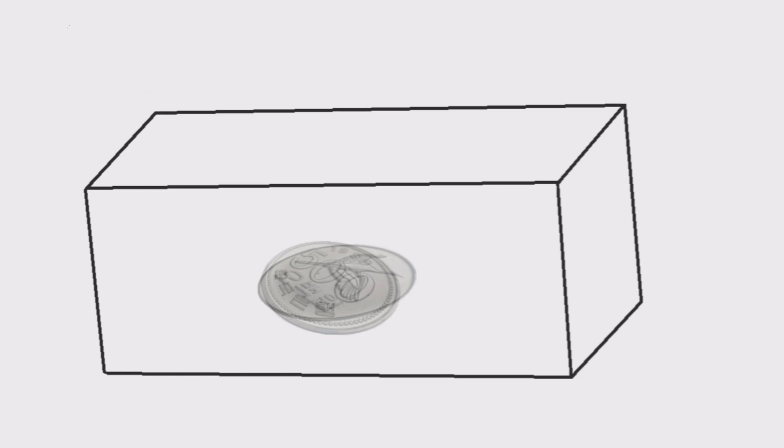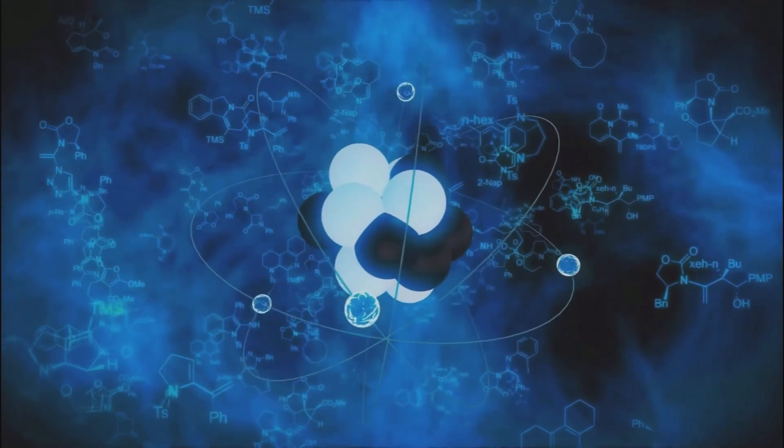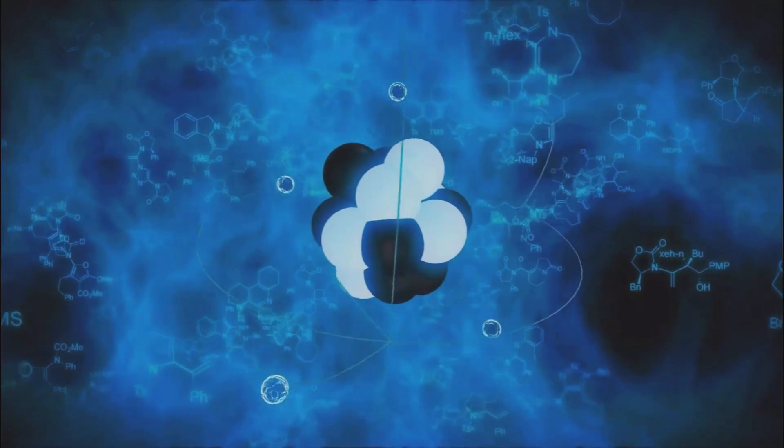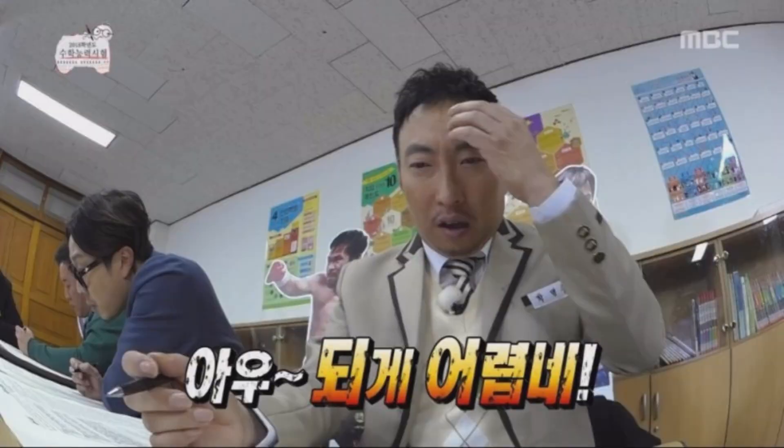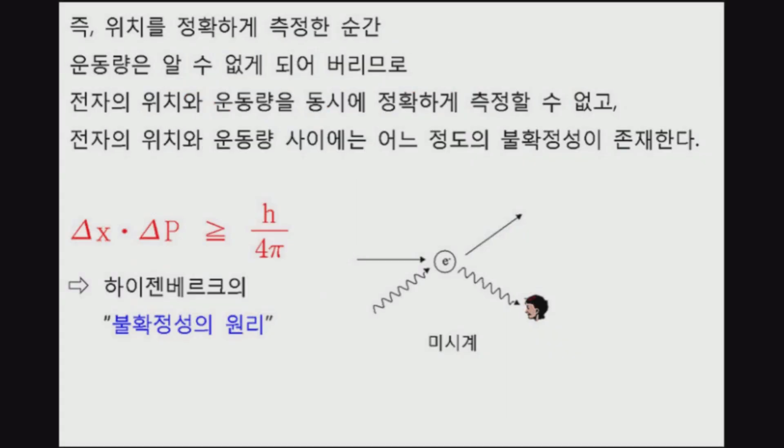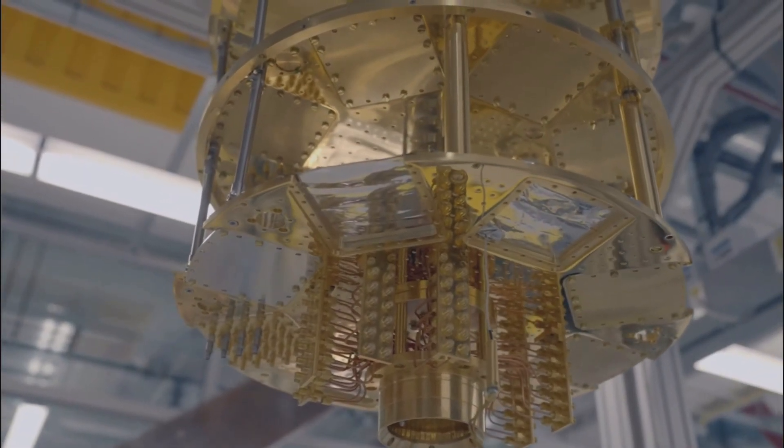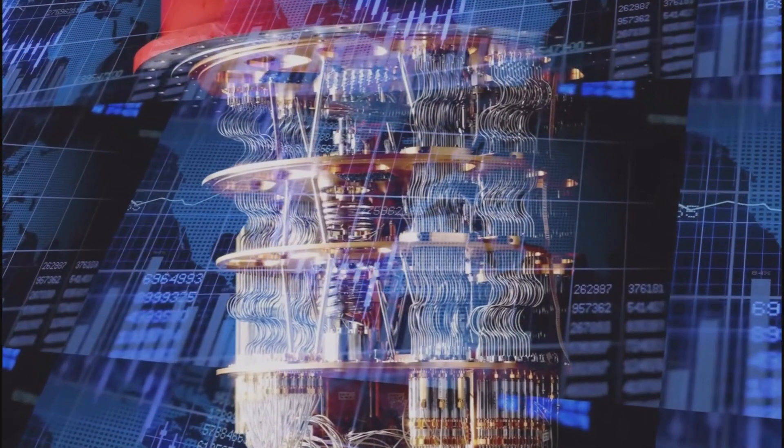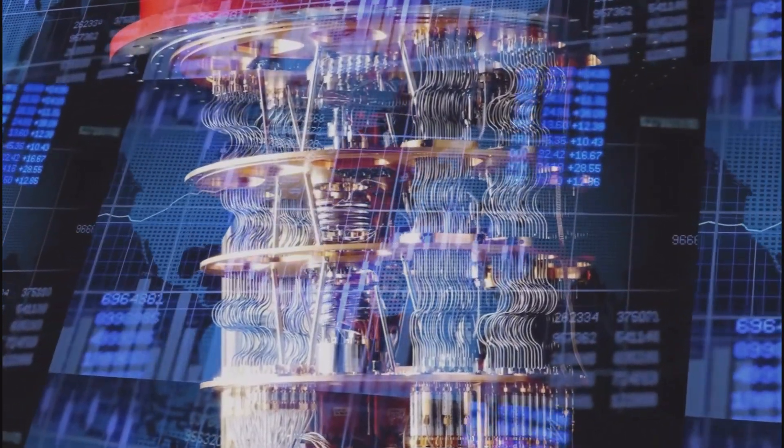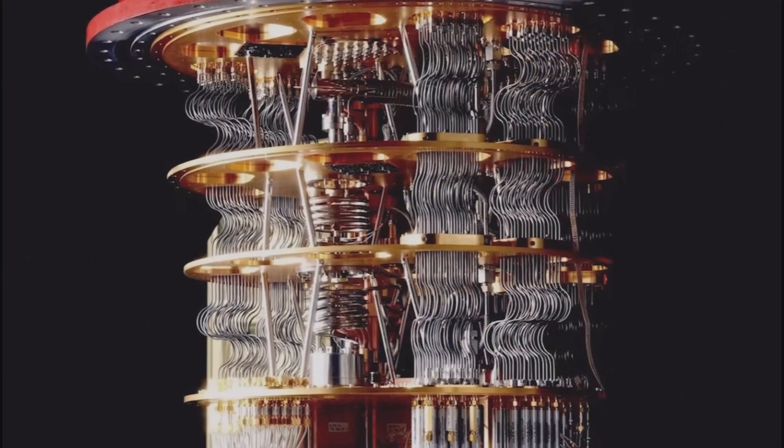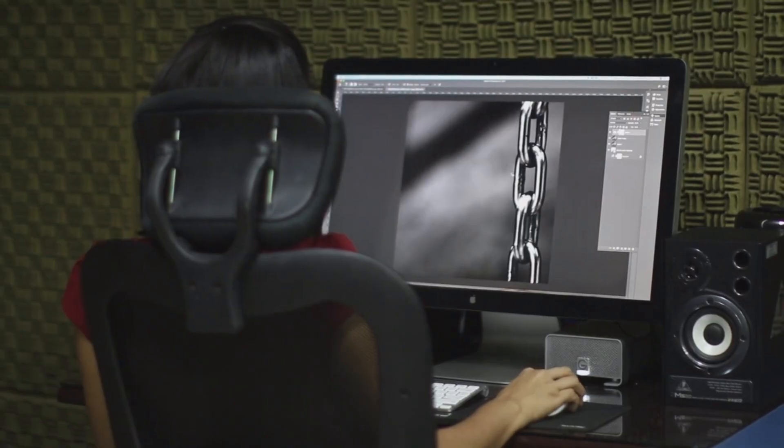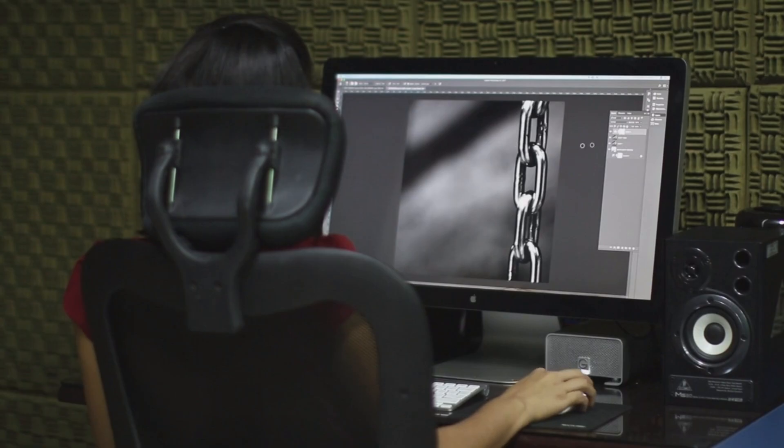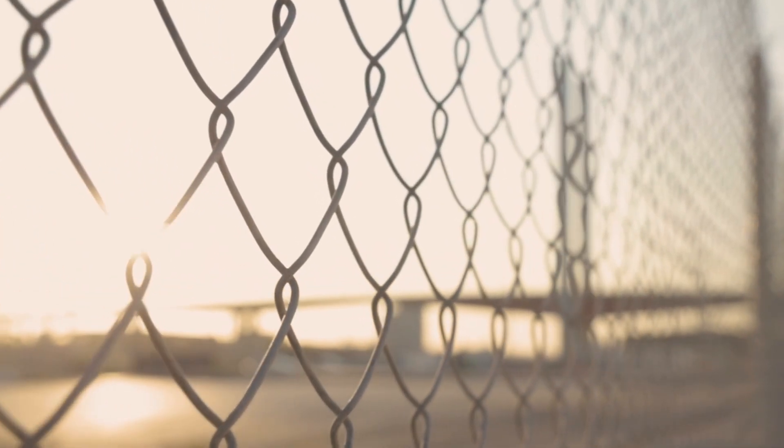두 번째로 양자중첩과 얽힘 같은 양자역학의 핵심 원리를 이용하는 것은 이론적으로는 매력적이지만 실제로 이를 구현하는 것은 매우 어렵다. 양자상태의 불확실성과 민감성 때문에 시커모어 같은 양자컴퓨터는 계산 과정 중 발생 가능한 오류를 최소화하기 위해 상당한 리소스를 투입해야 하는데 실제로 시커모어의 대부분의 연산 능력은 이러한 오류를 감지하고 수정하는 데 사용된다. 이는 현재의 양자컴퓨터 능력이 고정 컴퓨터에 비해 압도적인 계산 능력을 발휘하기까지는 아직 많은 장애물이 남아있음을 의미한다.